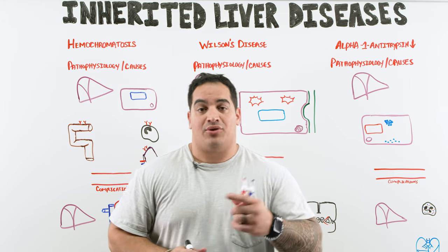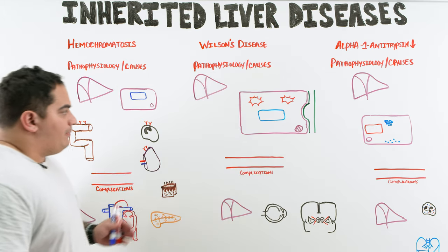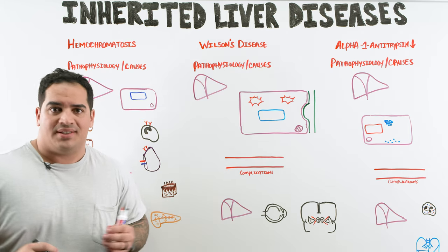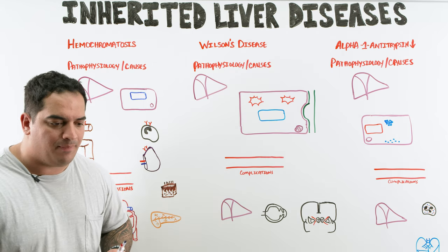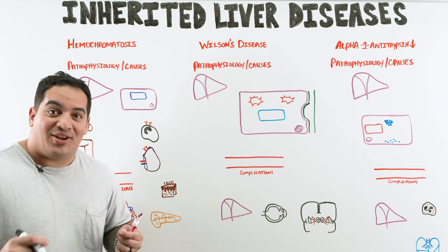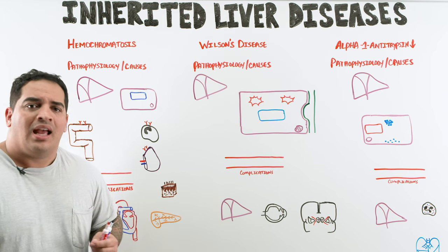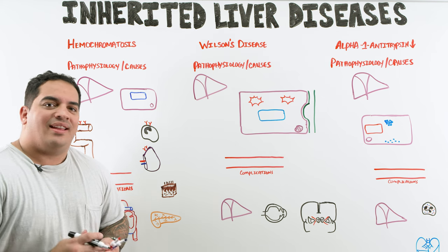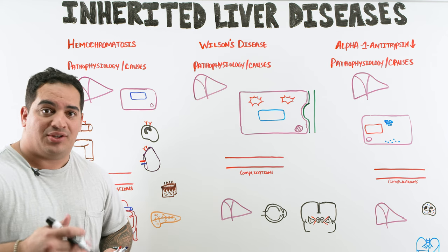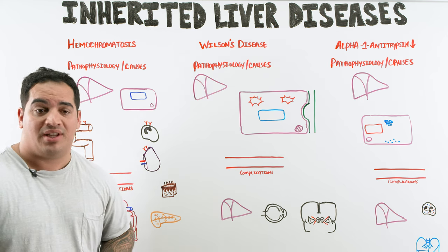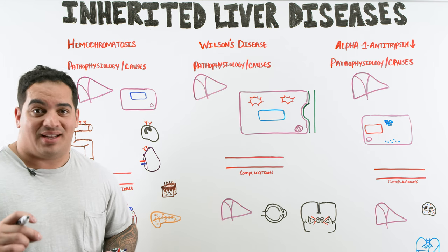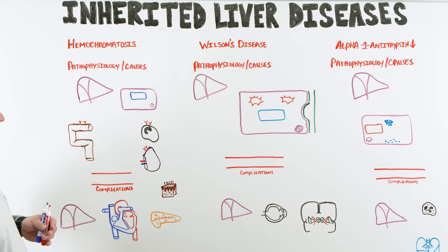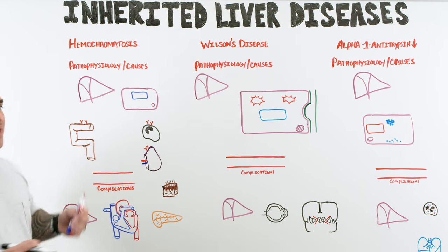Let's take our time and go through each of these three inherited liver diseases. What I really want us to get out of it is an understanding of the pathophysiology, because it helps us understand how these patients will present, the complications they'll develop, and it plays a big role in diagnostics. Let's start with hemochromatosis.